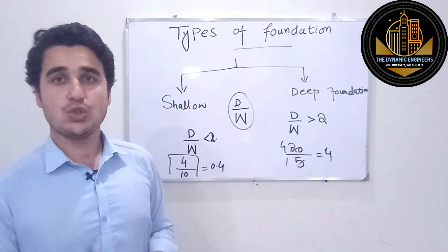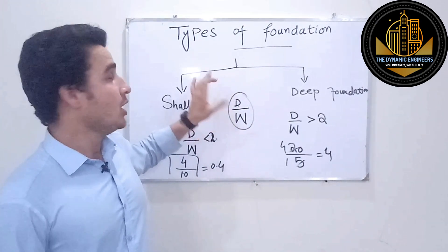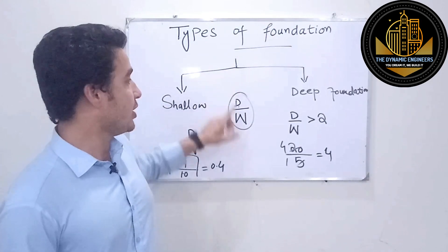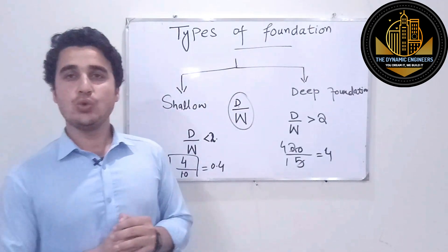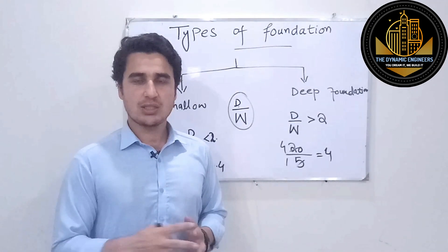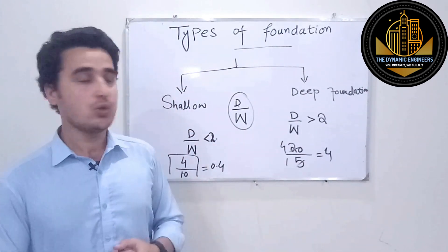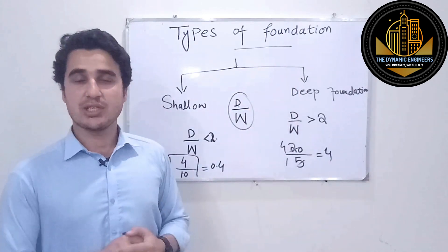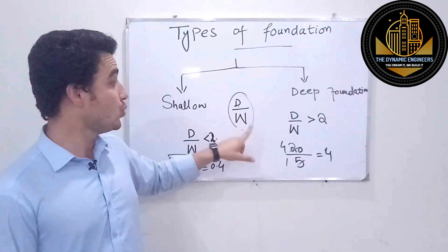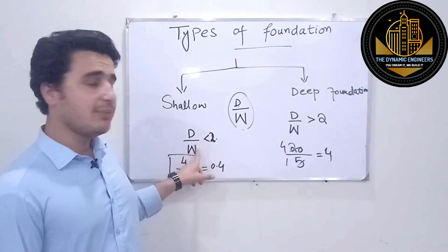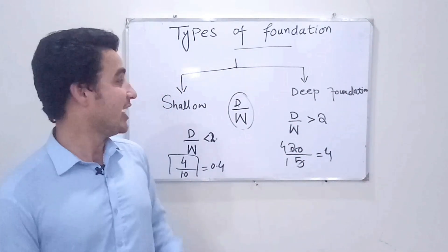There are other differences as well, but those are theoretical concepts. The mathematical value for differentiating between deep and shallow foundation is the depth-to-width ratio. Other properties include feasibility, cost, and the mechanism of load transfer — how shallow foundation transfers load versus deep foundation. The key value to keep in mind is: D/W less than 2 is shallow, D/W greater than 2 is deep.